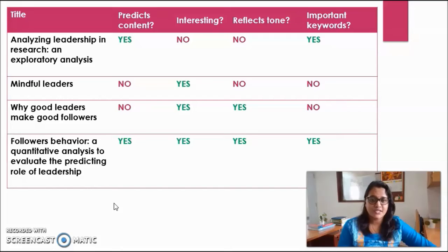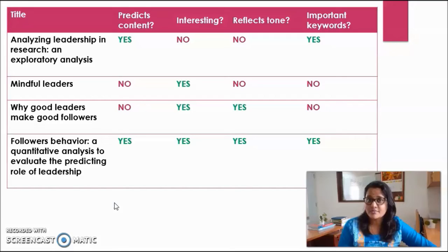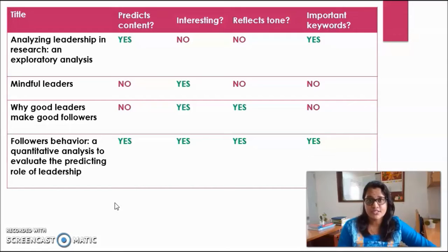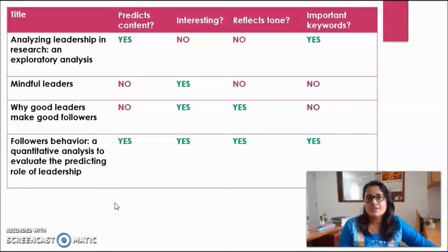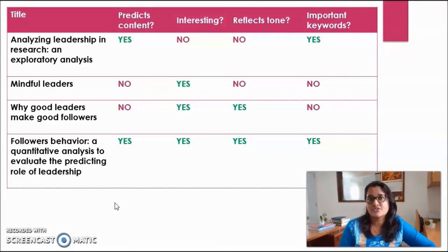Finally, 'Followers' Behavior: A Quantitative Analysis to Evaluate the Predicting Role of Leadership.' Here you have the content — the variables under study are clear. You find the title interesting because so many things are written, including the methodology, the predicting variable, and the dependent variable. It also tells you the tone and the kind of study. As well as that, it provides multiple keywords. If you take these words and search on Google Scholar, you will be able to find this paper very efficiently. This is why some papers pop up very commonly in searches, while other good papers are hardly searchable on search engines.